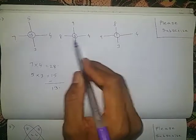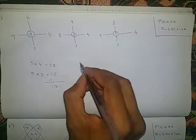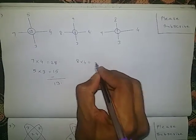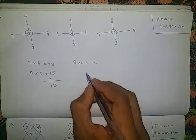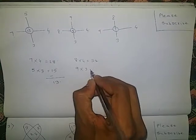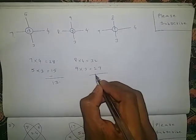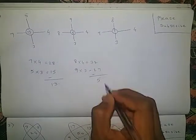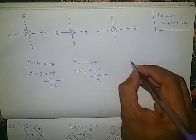The same logic here also: 8 fours are 32. 9 threes are 27. If you subtract these two, 32 minus 27 is 5, which is the middle number.